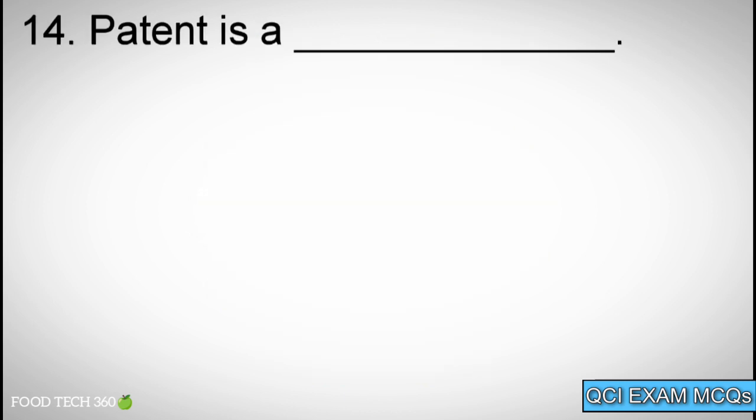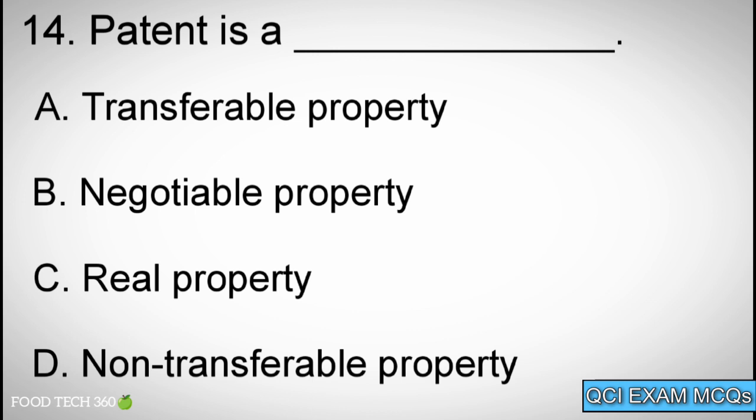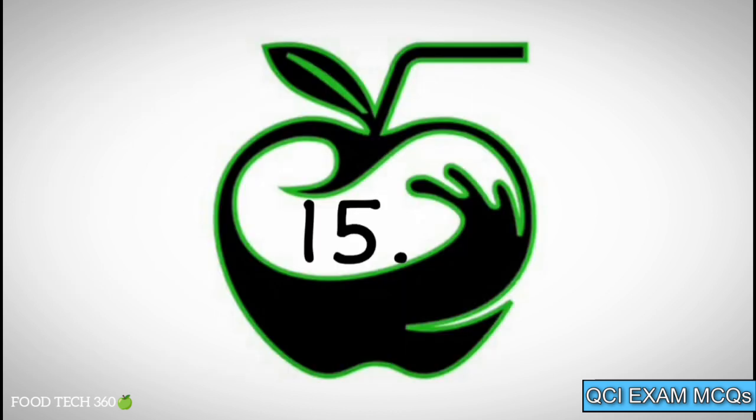Question number 14: Patent is a? Options: A. Transferable Property, B. Negotiable Property, C. Real Property, D. Non-Transferable Property. Correct answer: A. Transferable Property.